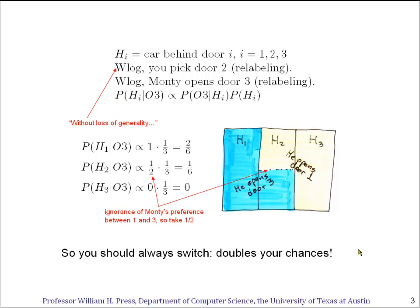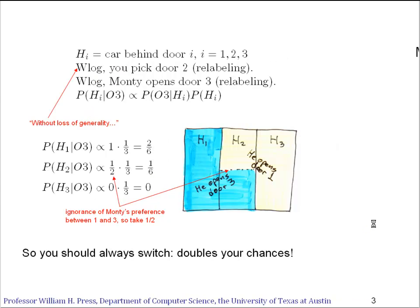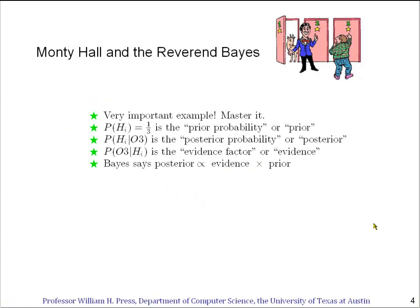So here we've seen yet another example of where data changes the probabilities. This is a very important example — I hope you master it. If you don't understand why you should always switch doors in this game, go back and review the previous slide.